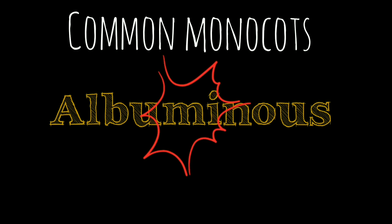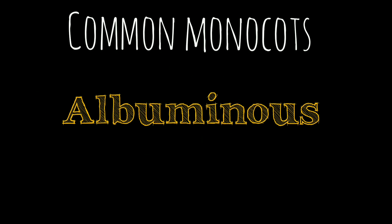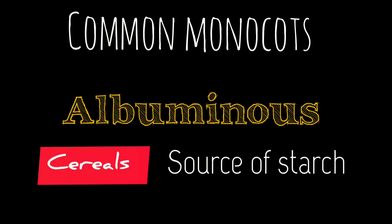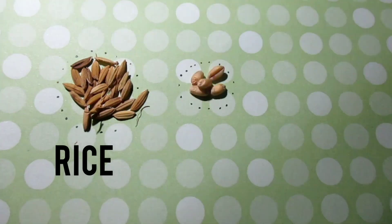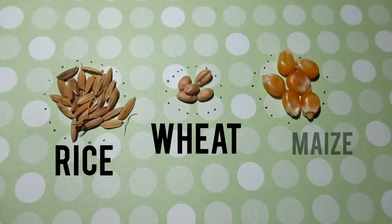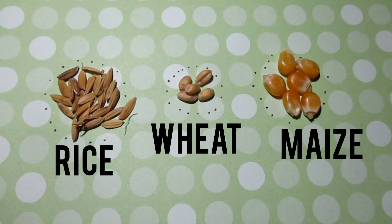Most of the common monocotyledonous seeds are albuminous. The large endosperm of cereals is the most important source of starch, the principal food of the people. Rice, paddy, and maize may be taken as type seeds of this class. They are the most important cereal crops of the world.